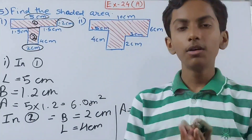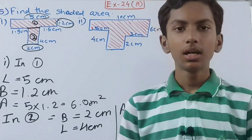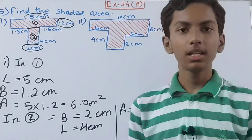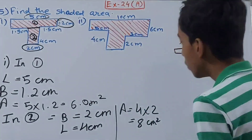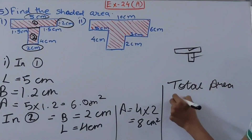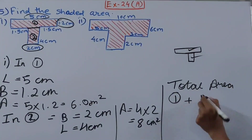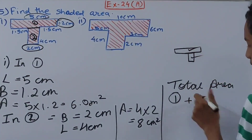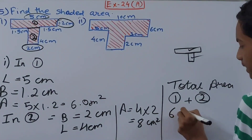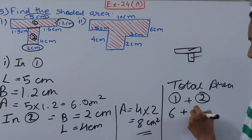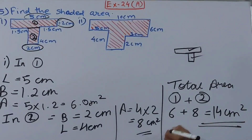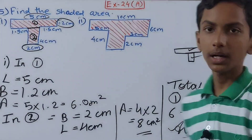Now, the question is asking for the area of the entire figure, not just the two separate parts. So we add the areas of both rectangles. Total area = Area 1 + Area 2 = 6 + 8 = 14 square centimeters. This is our answer for the first part.